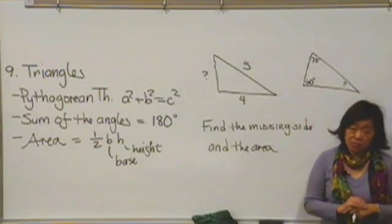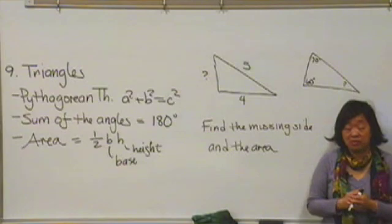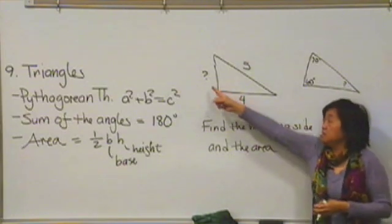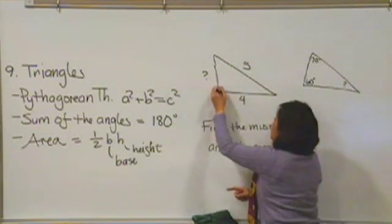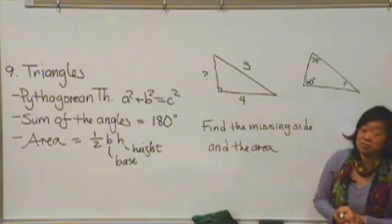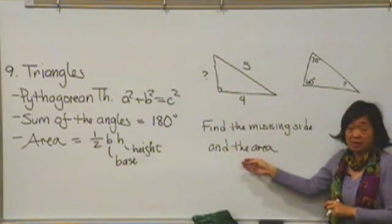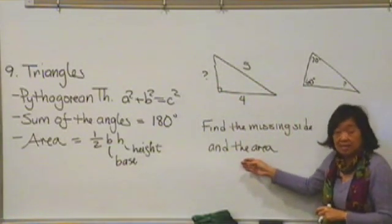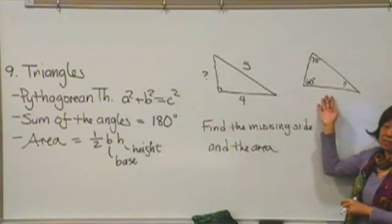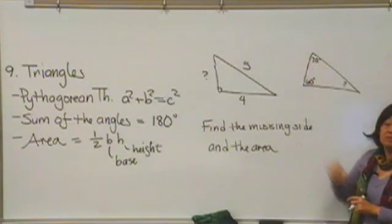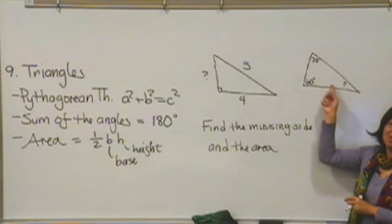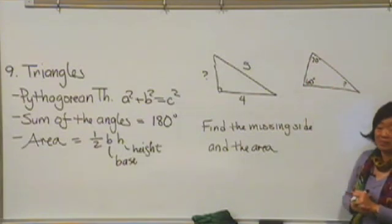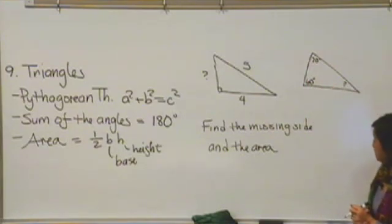So here's one for you to try, one of everything we just reviewed. I'd like you to find the missing side of this right triangle, and then after you do that, find the area of the triangle. And the last thing I'd like you to do is, here's a triangle. You'll notice it's not a right triangle, but I've given you two of the angle measures, and I'm asking you to find the third one.